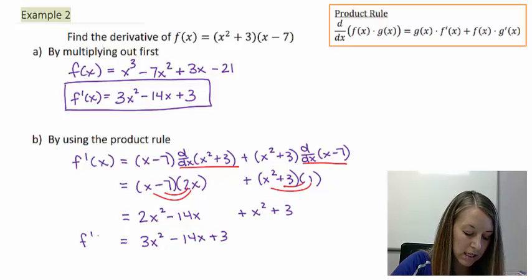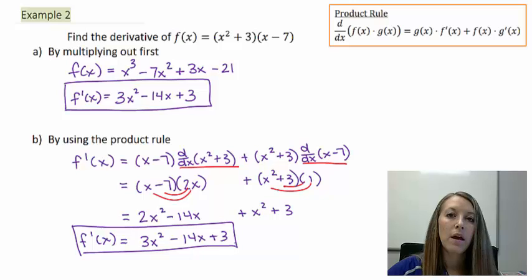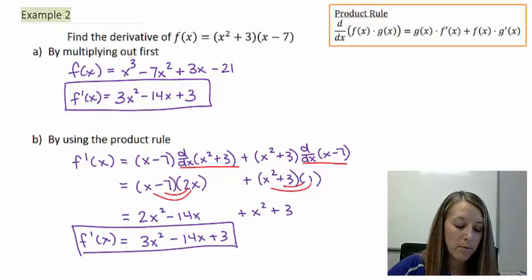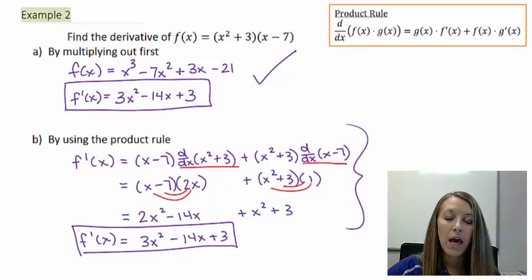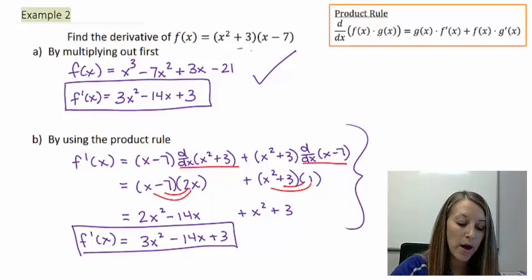And of course, that is the exact same answer that you got from part A, which means you have done it correctly. Again, the question of why am I doing it this way when this way is much shorter. And the reason is because this way is not always going to work.